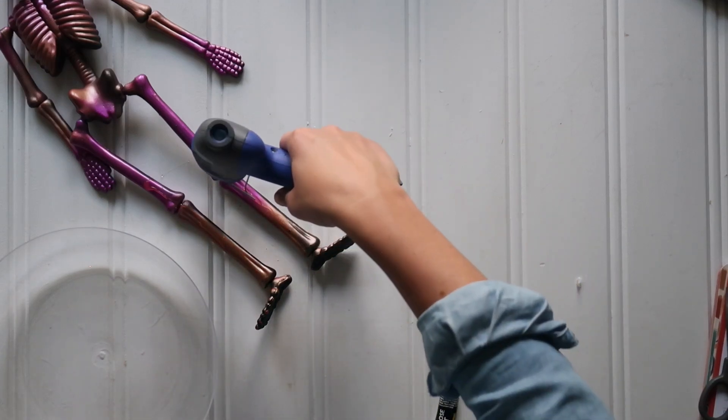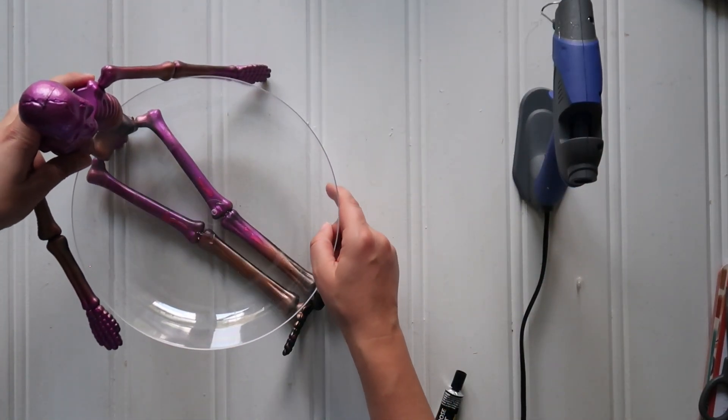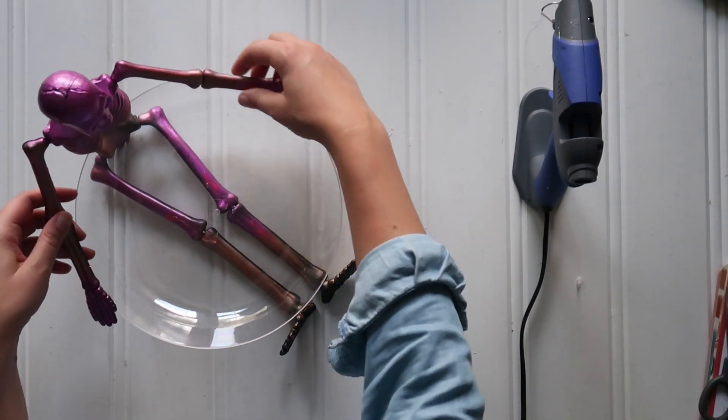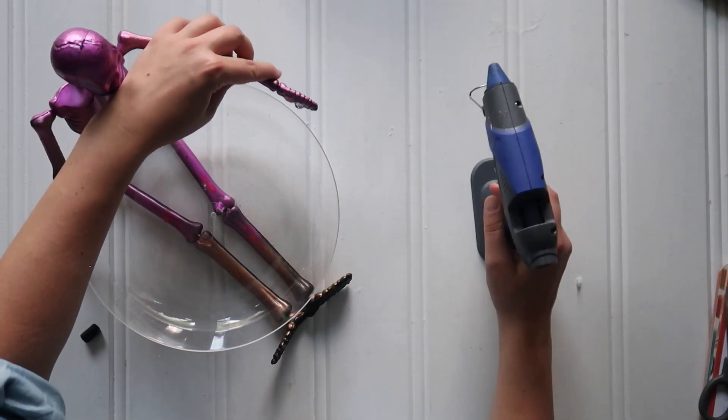So I just arranged the skeleton the way you like and then add a bit of E6000. I started on the legs and then moved on to the hands. I just kind of set everything in place the way you want it. For the hands I didn't even want to wait for the hot glue to dry so I just taped it in place with a little bit of painter's tape.